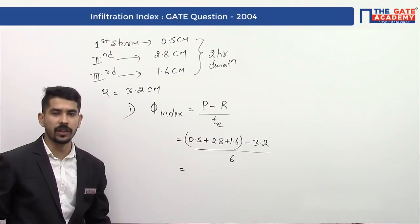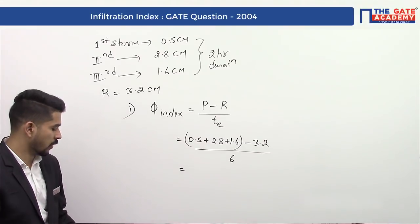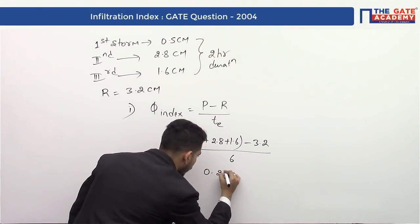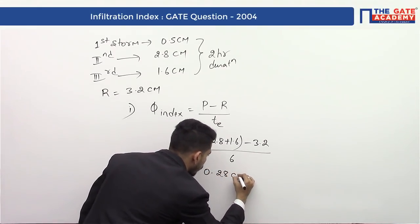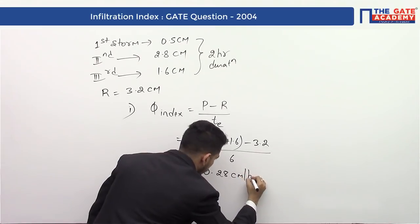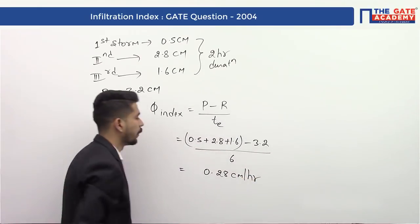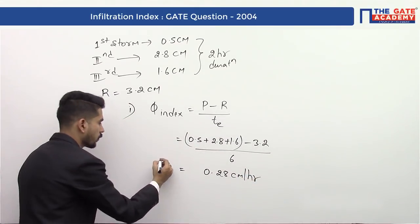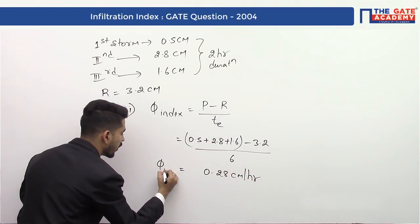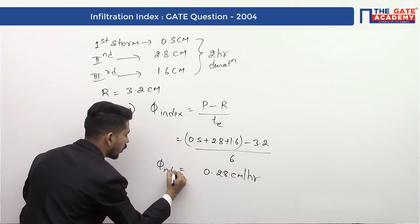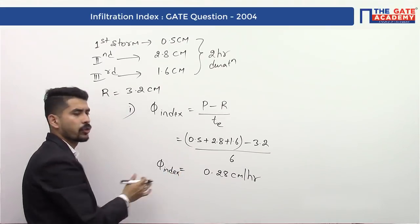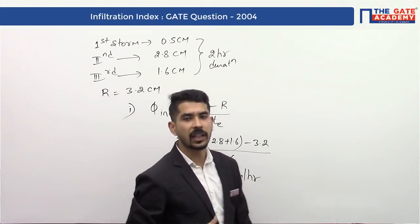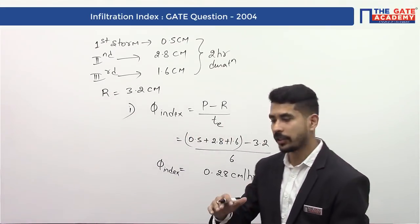If we calculate this, we get a value of 0.28 centimeters per hour. This is the first step, giving phi index as 0.28 centimeters per hour.